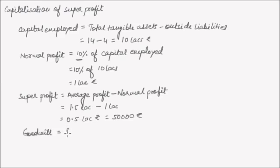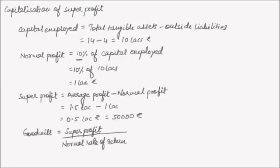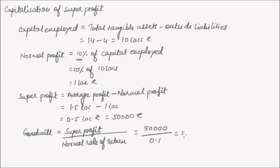The goodwill amount is calculated as super profit divided by normal rate of return. In the average profit method, we used average profit divided by normal rate of return to get the total capitalized value. Here, we directly calculate goodwill by replacing average profit with super profit in the same formula. So we put 50,000 divided by 0.1, which gives Rs. 5 lakhs.